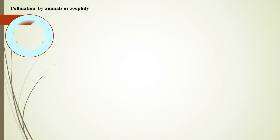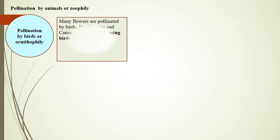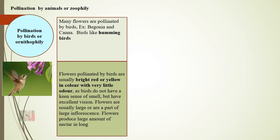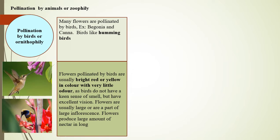Pollination by birds or ornithophily: Many flowers are pollinated by birds such as hummingbirds. Examples include begonia and canna. Flowers pollinated by birds are usually bright red or yellow with very little odor, as birds do not have a keen sense of smell but have excellent vision. Flowers are usually large or part of a large inflorescence. They produce a large amount of nectar in long floral tubes so that it is not consumed by insects.